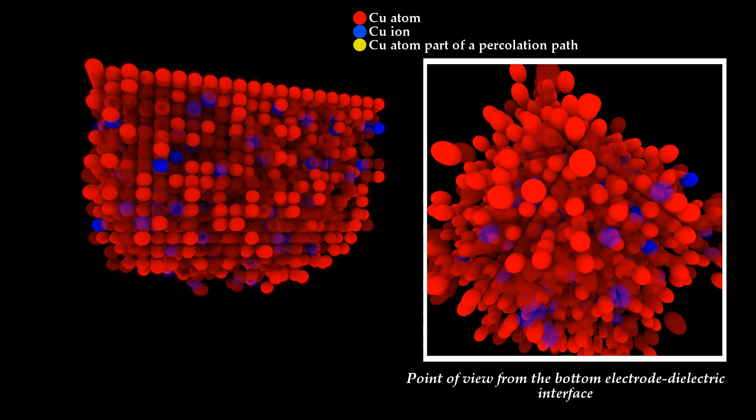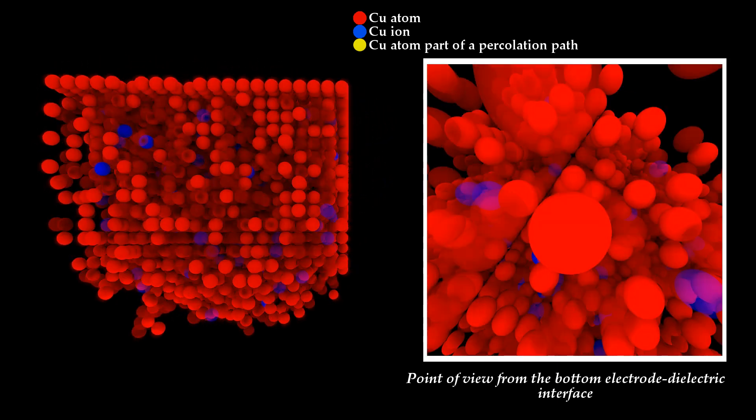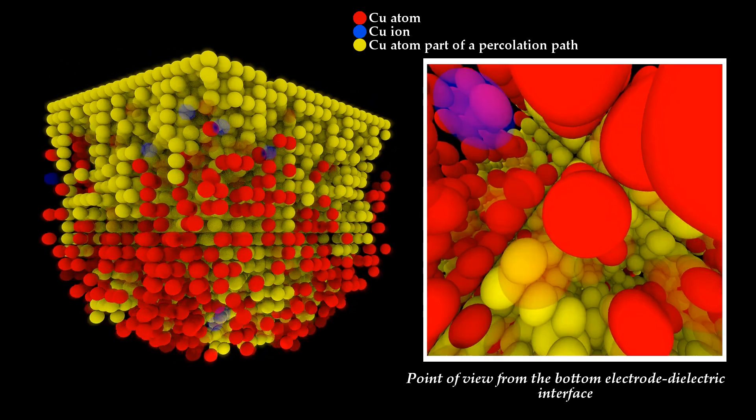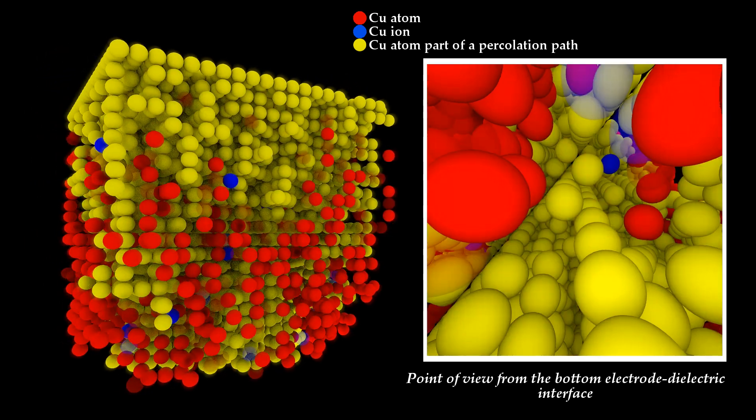The reduced cations can form clusters and if they keep on growing the electrodes can be electrically shorted. If this is the case a percolation path is formed.